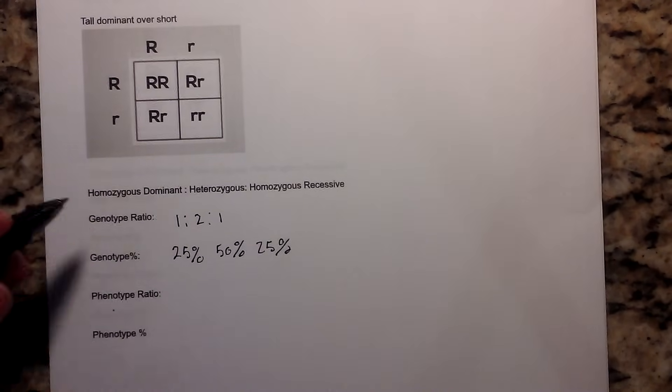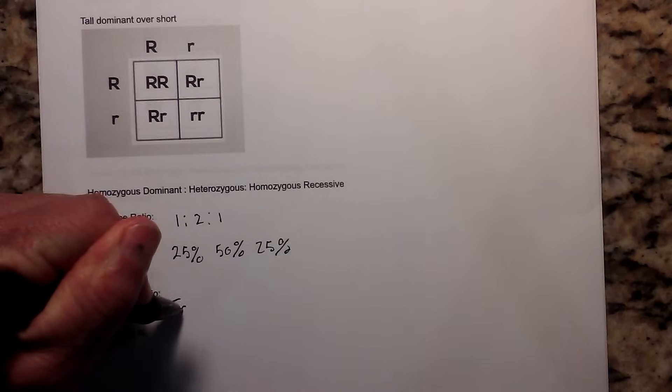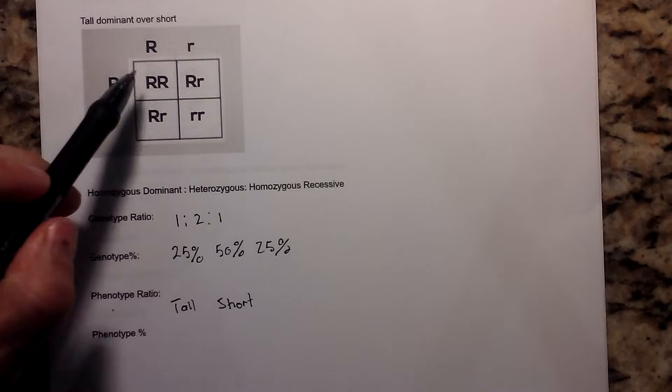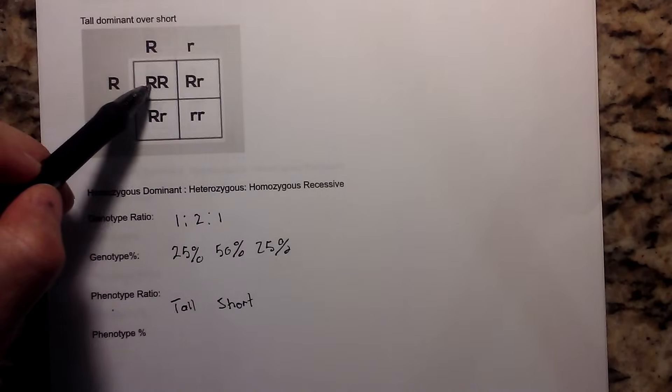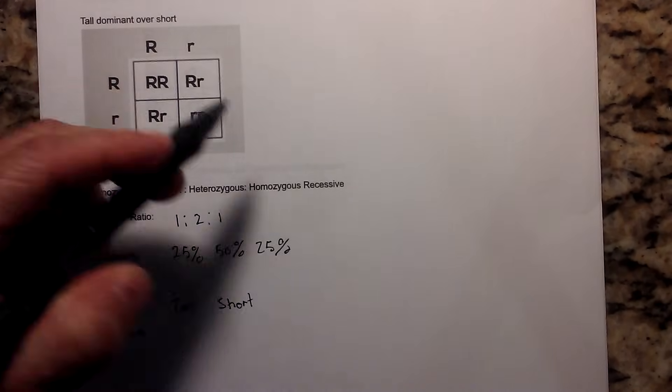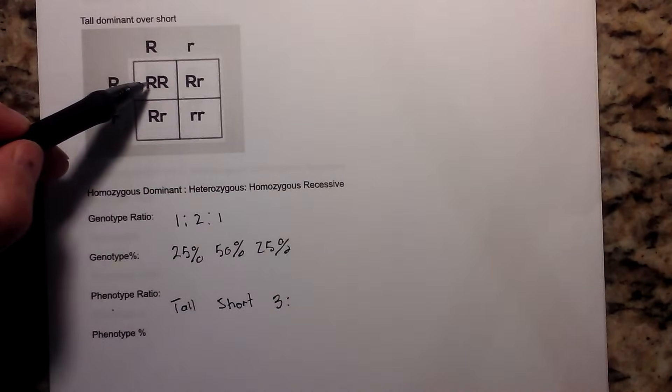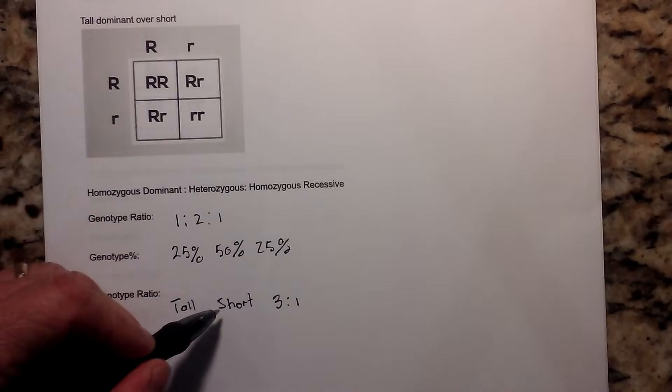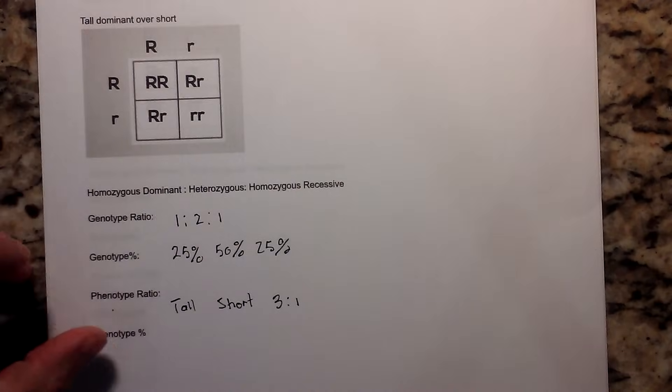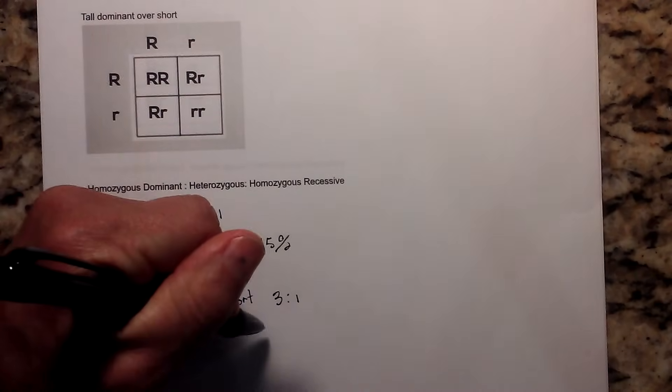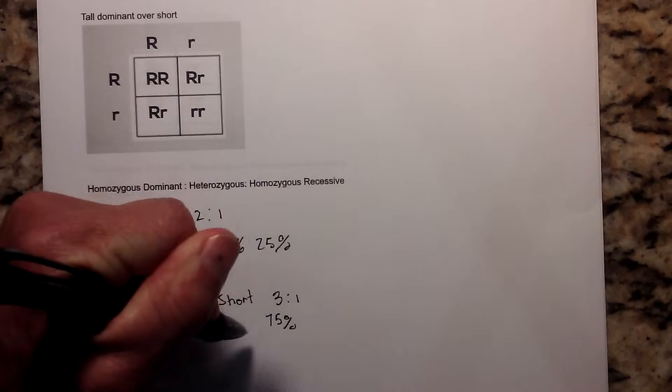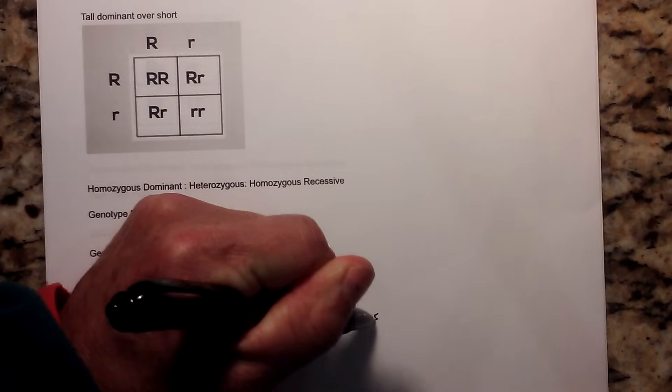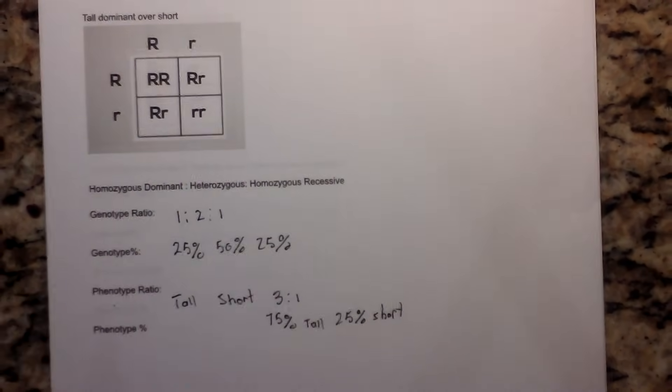Now let's look at the phenotype. And the phenotype will be how many will be tall and how many will be short. So tall will be any time it is the dominant trait, so it will be 1, 2, 3, because any time you have a capital letter, you get the dominant trait, and then 1 for short, which is the recessive trait. And if we would like to convert that into a percentage, that will be 75% tall and 25% short.